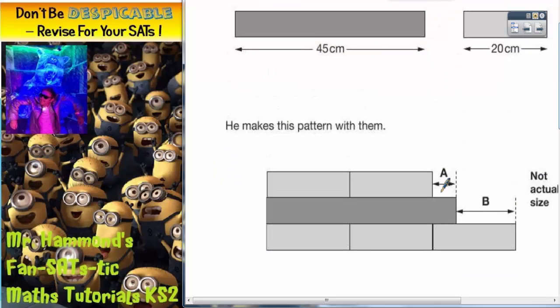So you can see by the picture that A's this little gap here and B's this little gap here. So we've got to use the information of 45 and 20 for the two lengths to figure out what A and B are.